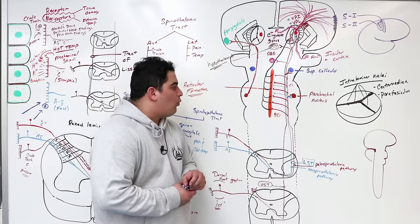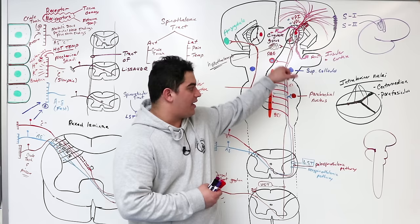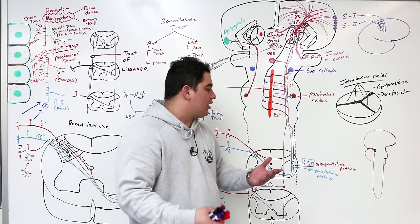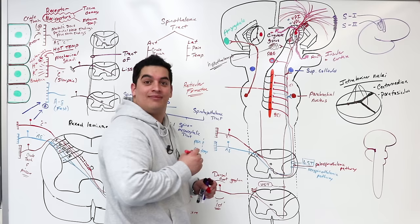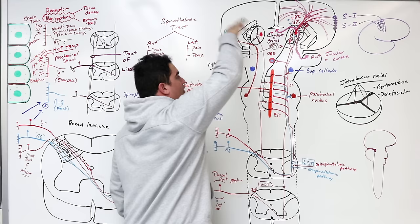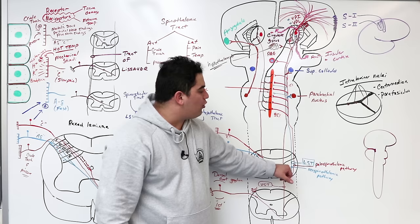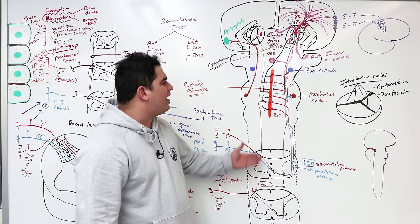One last point: with C fibers, remember they mostly cross to the contralateral side and ascend as the lateral spinothalamic tract — specifically the paleospinothalamic pathway. But it's not always contralateral: some fibers can stay ipsilateral, giving off collaterals to the reticular formation via the spinal reticular fibers. About 85% of those go to the reticular formation, while maybe 15% reach the intralaminar nuclei and then project to different parts of the cortex.